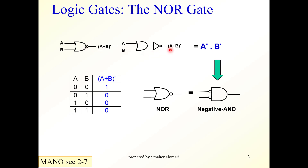The output of the NOR gate is equal to (A OR B) complemented. Applying De Morgan's theorem, this is equal to A bar AND'd with B bar. So another symbol for the NOR gate is the negative AND.